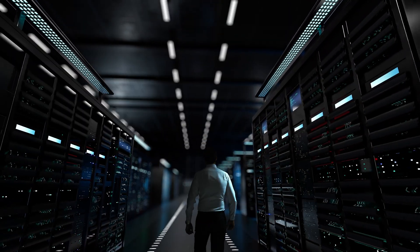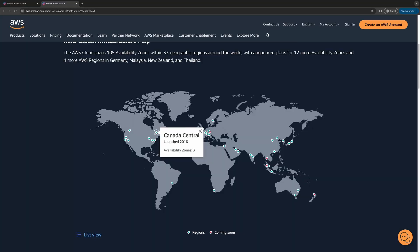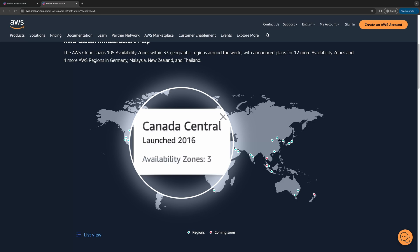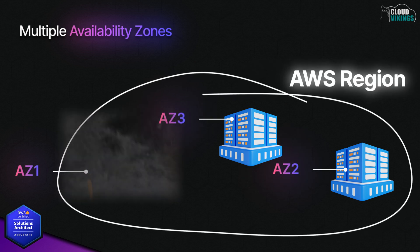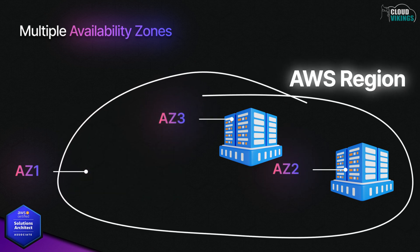Within each region, AWS has something called availability zones. We can basically think of an availability zone as a data center facility. AWS has multiple availability zones within each region to help its customers achieve their high availability objectives. So if there's a data center failure for some reason within that same region, the AWS services are still available. You still need to design your AWS cloud environments and applications to take advantage of these availability zones properly, but we'll get into that later in the course.